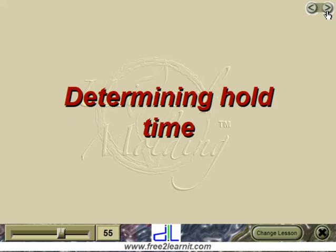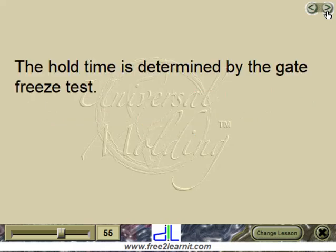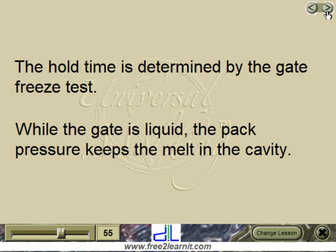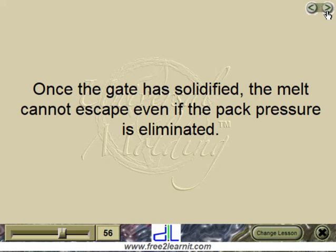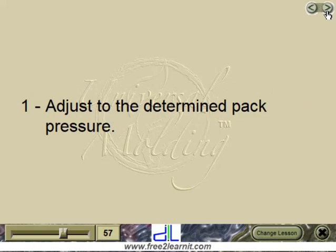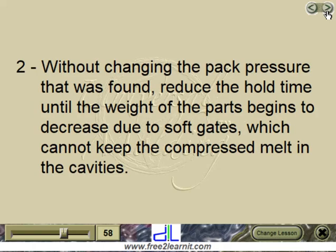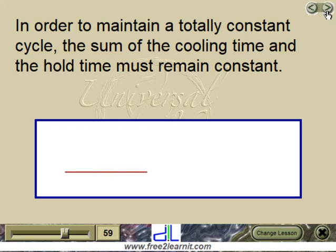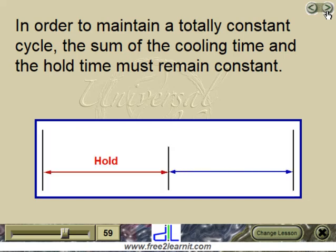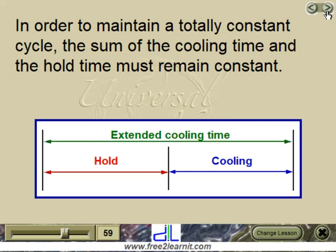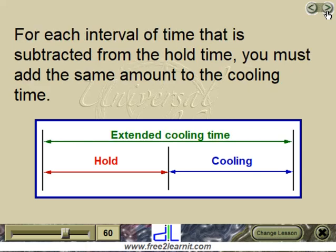Determining Hold Time: the hold time is determined by the gate freeze test. While the gate is liquid, pack pressure keeps the melt in the cavity. Once the gate has solidified, the melt cannot escape even if pack pressure is eliminated. Step 1: adjust to the determined pack pressure. Step 2: without changing the pack pressure found, reduce the hold time until the weight of the parts begins to decrease due to soft gates, which cannot keep the compressed melt in the cavities. To maintain a totally constant cycle, the sum of the cooling time and the hold time must remain constant — for each interval subtracted from hold time, add the same amount to cooling time.